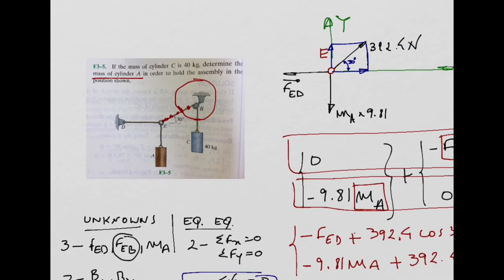To summarize this example: the goal was to show how we can use different free-body diagrams to obtain our equilibrium equations. Every particle we isolate gives us two equilibrium equations. So we need to balance the number of unknowns against the number of equilibrium equations we need — that's the key strategy for solving these problems.